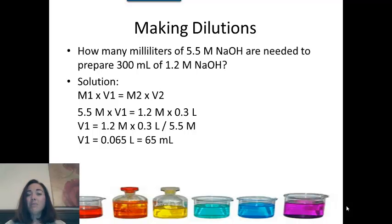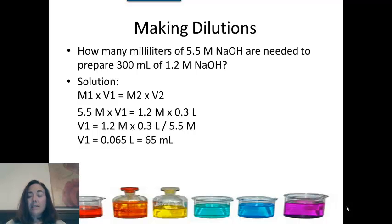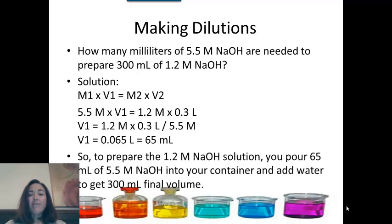My M2 is the new concentration I want to make, and the 0.3 liters is the new volume I want to make. So I plugged all that in, use algebra to rearrange, and you get 0.065 liters. I just multiplied by 1,000 to convert that back to milliliters. So what that means is that you need to take 65 milliliters of that concentrated solution, and add water until I get to 300 milliliters.